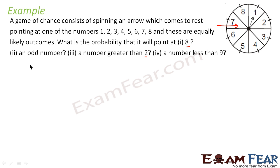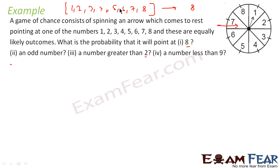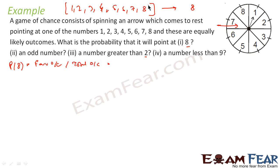The first question is: what is the probability that it points at 8? It can hit at 1, 2, 3, 4, 5, 6, 7, or 8 — any number — because he is hitting randomly. There are 8 possible outcomes. Probability of 8 is favorable outcome by total outcome. Favorable outcome is 1 — there is only one chance that it will land on 8 — and total outcome is 8. So probability of 8 is 1 by 8.